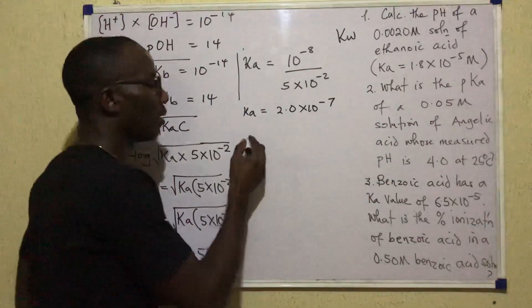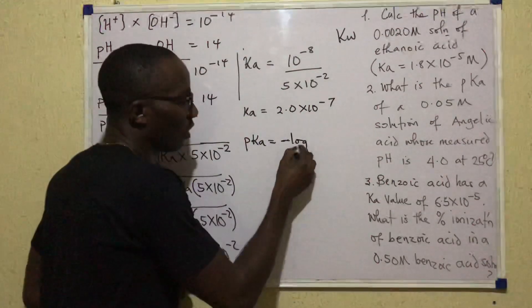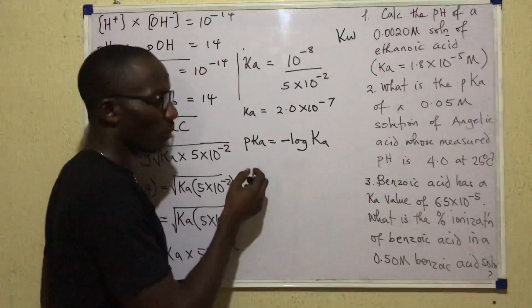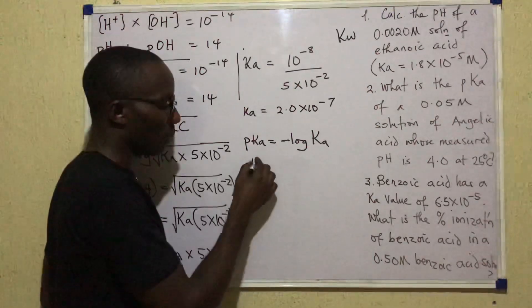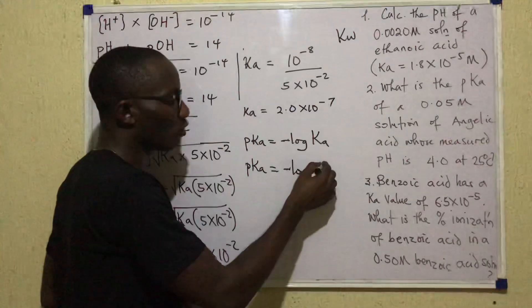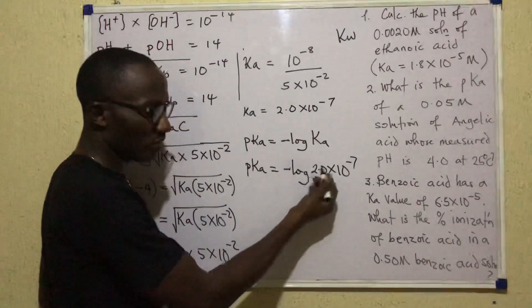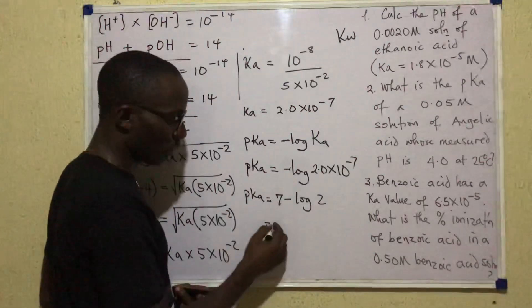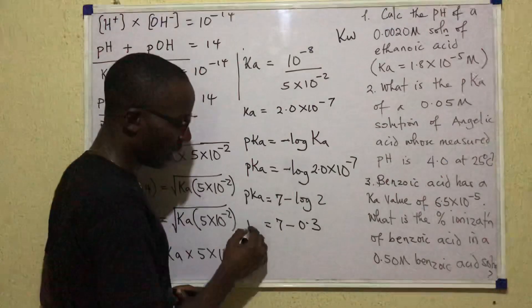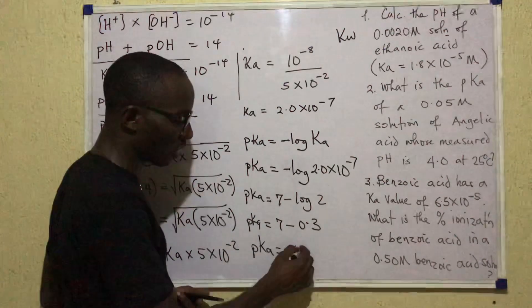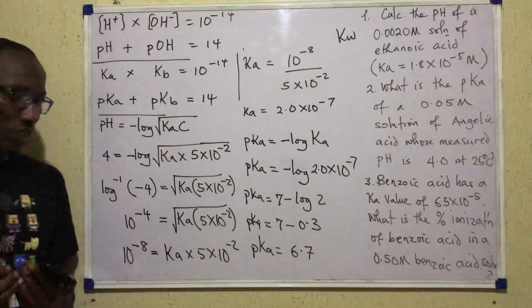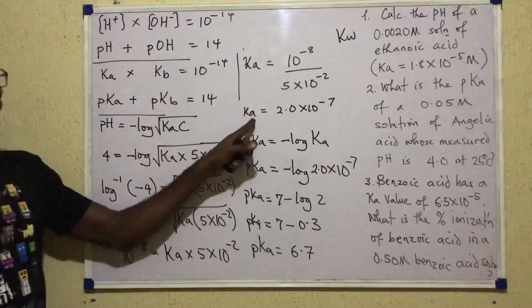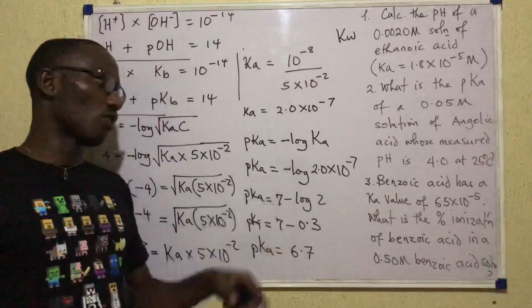Having obtained Ka = 2.0 × 10⁻⁷, pKa equals the negative log of Ka. So pKa = -log(2.0 × 10⁻⁷), which equals 7 minus log 2. Since log 2 = 0.3, we get pKa = 7 - 0.3 = 6.7. So the pKa of this solution is 6.7.